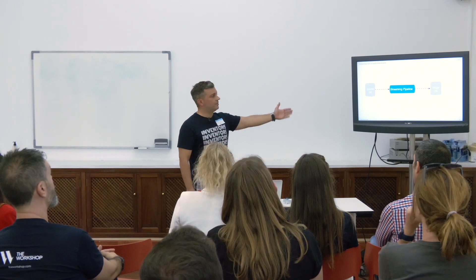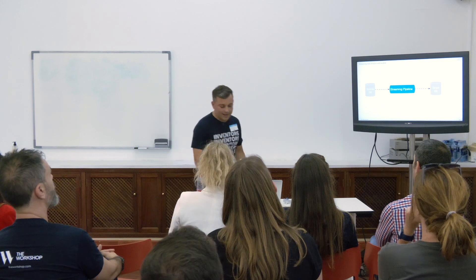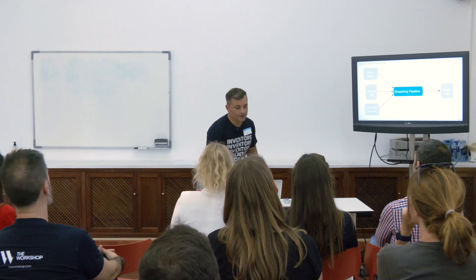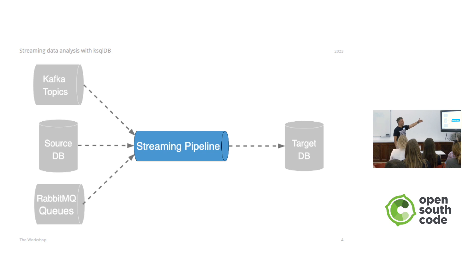But what happens if, instead of a source DB, we have Kafka topics or RabbitMQ? In that case, it's difficult to perform the reconciliation — to know that we are not losing data and to tell our customers that they can trust the data we are producing, because it is exactly the same as what we are getting in the input. So now we are going to see how ksqlDB can help us with this.